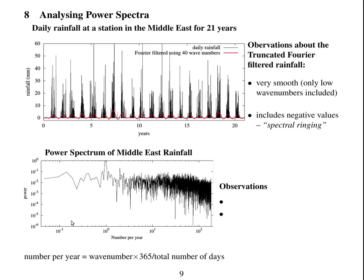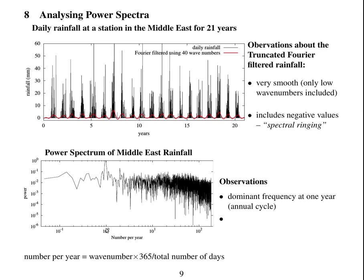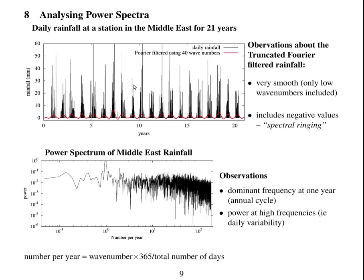Here is the power spectrum of this rainfall data. The x-axis shows frequency in cycles per year, calculated as wave number divided by 365 divided by the total number of days. There is a clear peak at one per year, representing the annual cycle. There is also a lot of power at high frequencies, representing the fact that rainfall varies significantly from day to day — daily variability contributes power across all frequencies.